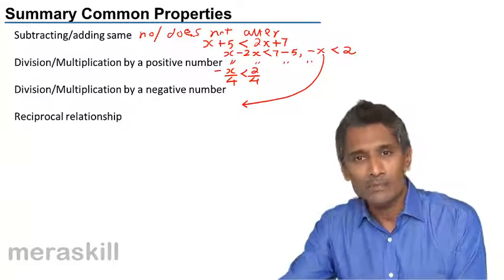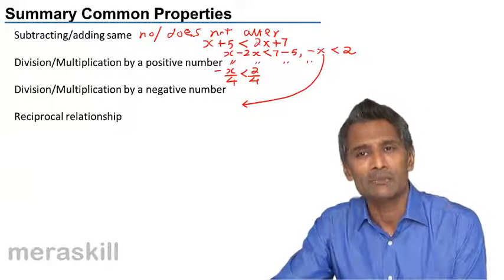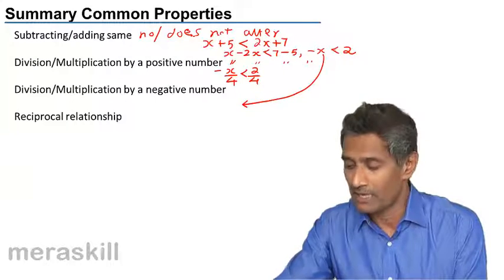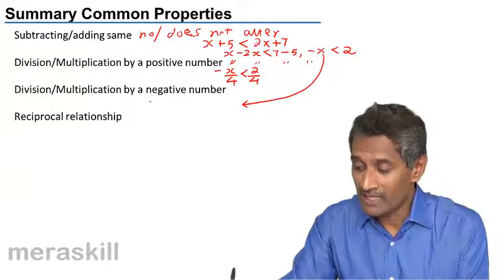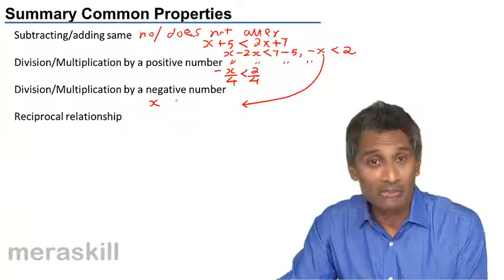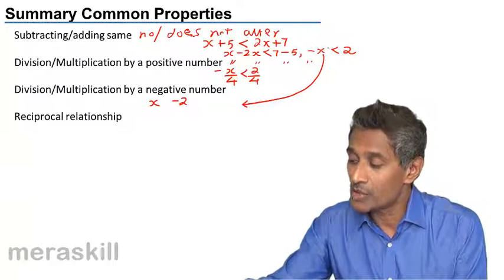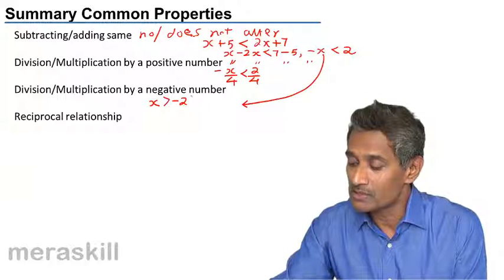Hence to make this work, we take the minus 1 to the other side. But taking the minus 1 to the other side is the same as either multiplying or dividing. Hence in that case, x, you take it to the other side or you divide that, so you get minus 2 and it does not remain less than - it becomes greater than.